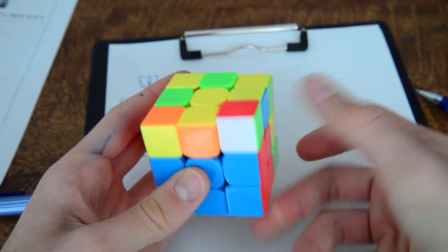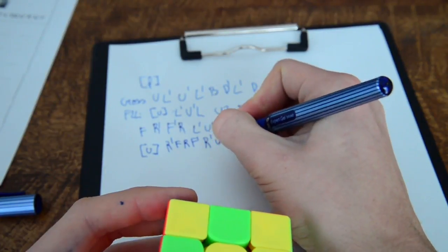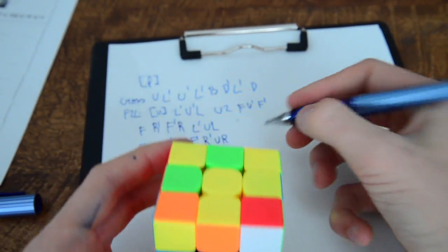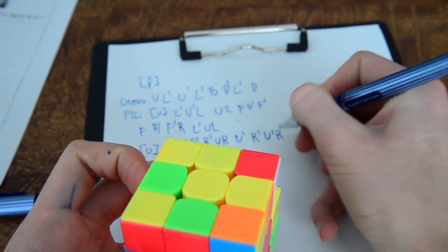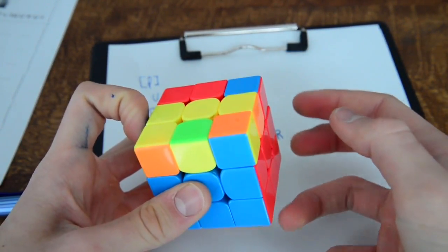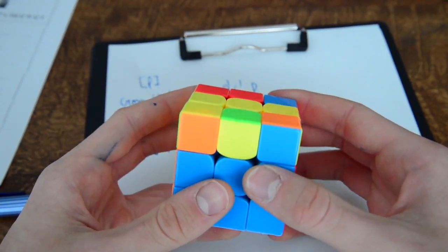So let's do R' U R then U' and R' U' R. Now we are done with the F2L.